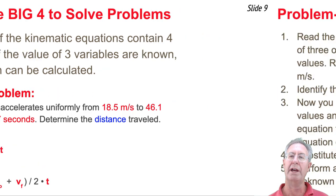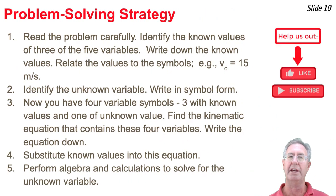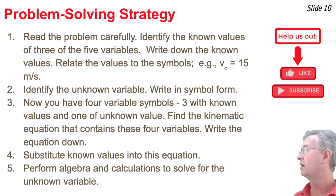So the basic strategy will go something like this. First, we're going to read the problem carefully, and we're going to identify all known values of at least three of the five variables. In fact, we're going to write down the known values and relate these values to the symbols that are used in the equations. For instance, we might say something like v original equal 15 meters per second. Then we're going to identify the unknown variable. I'm going to write it in symbol form. For instance, we might say, find the d.